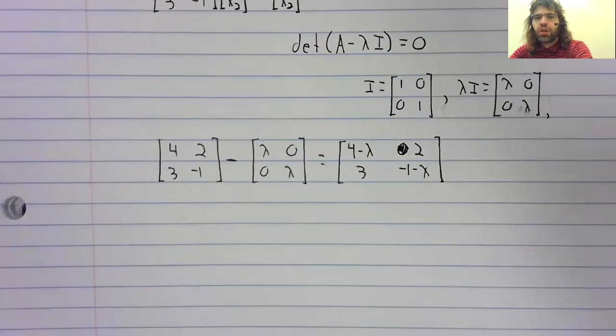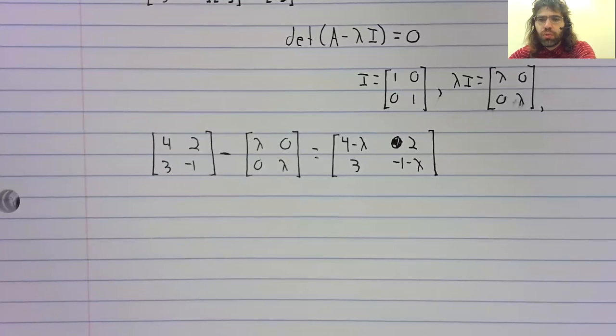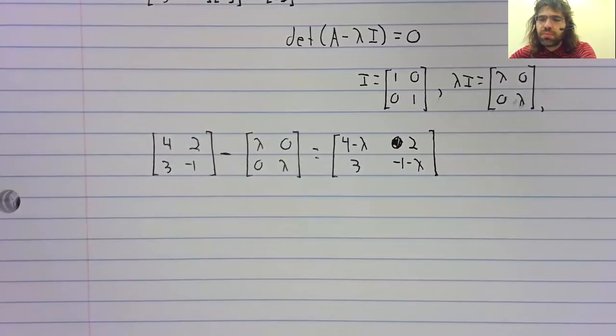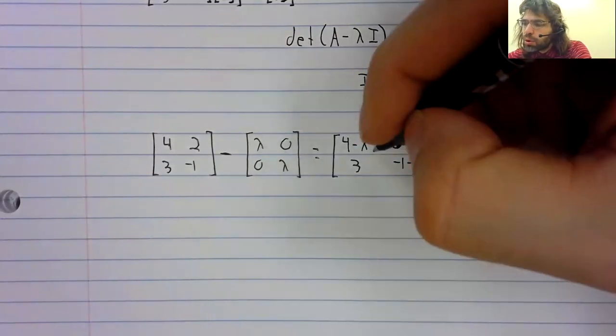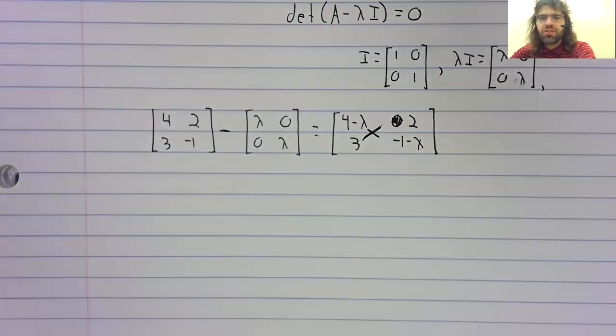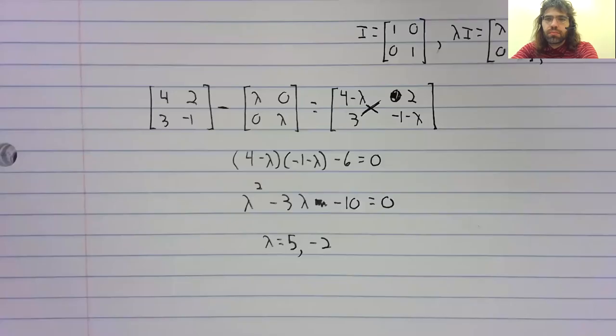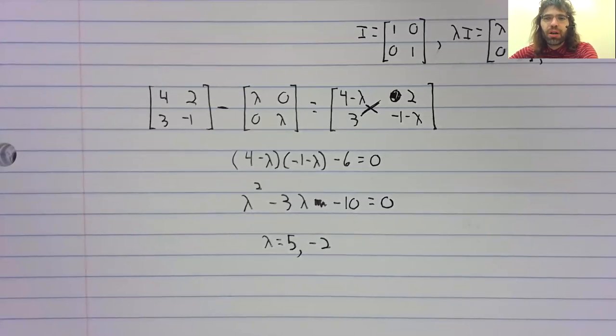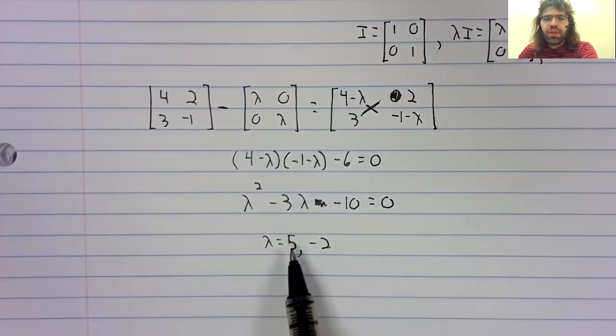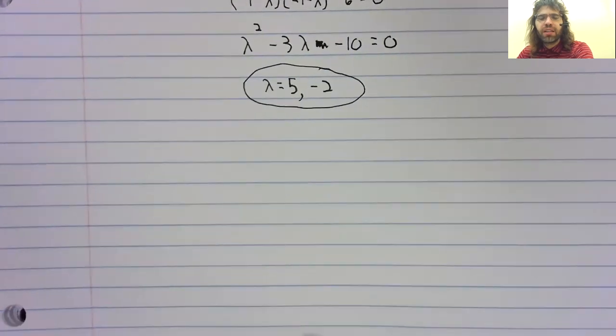Finding the determinant of a two-by-two matrix is relatively straightforward. We multiply the diagonal and the anti-diagonal elements, and we subtract them. Doing the algebra part of this problem off screen, we find that we have two eigenvalues: five and negative two.